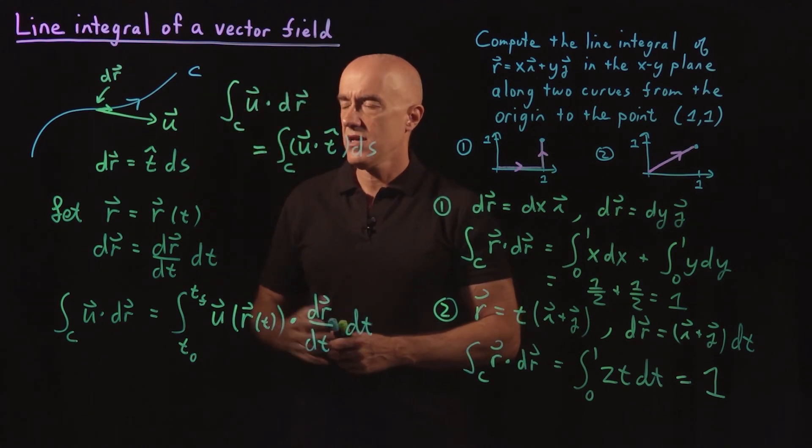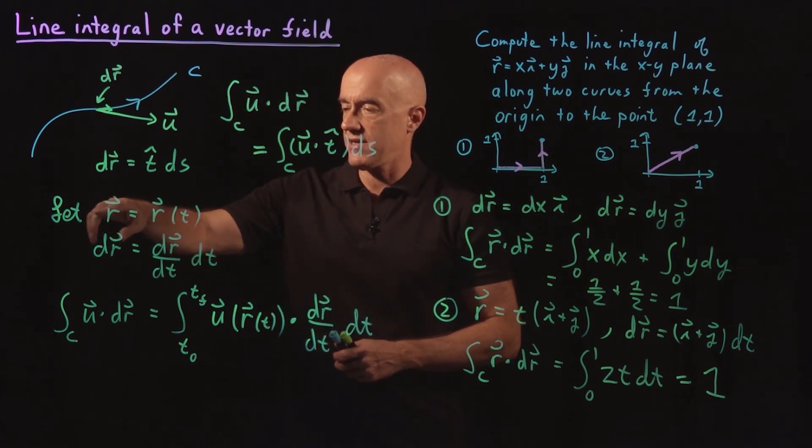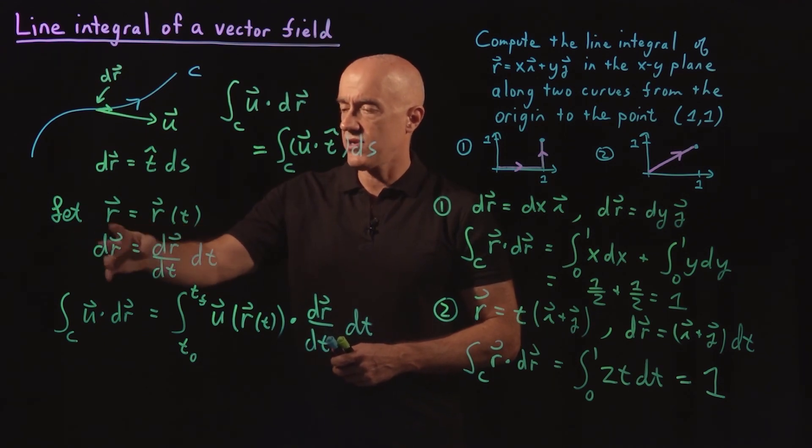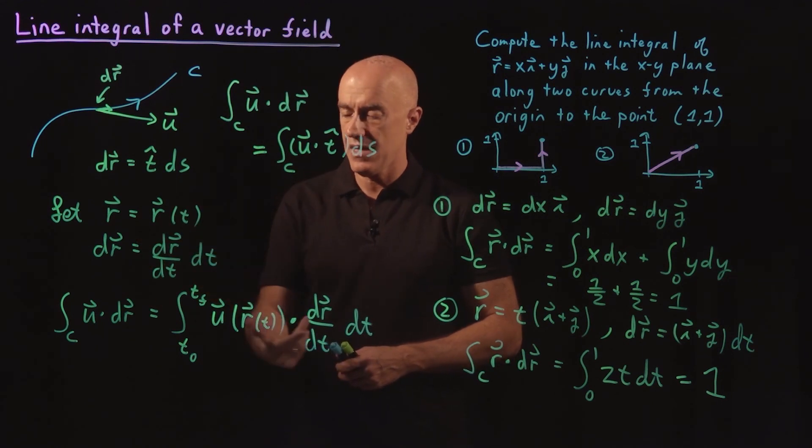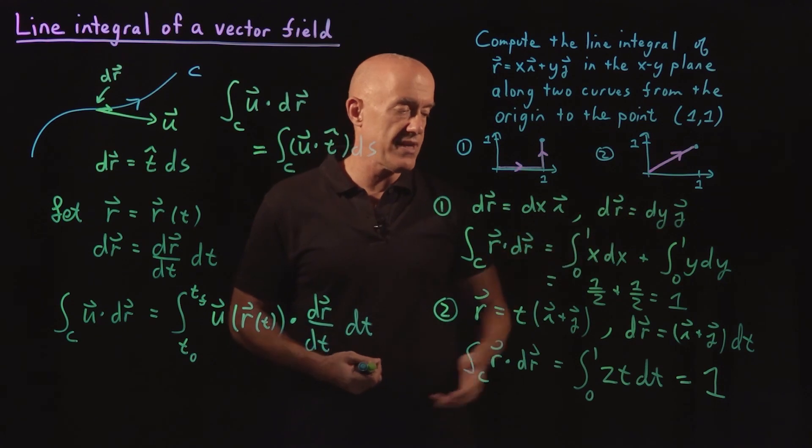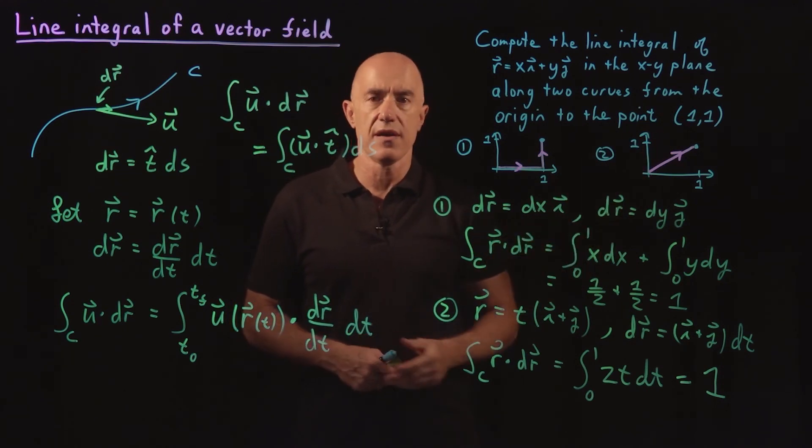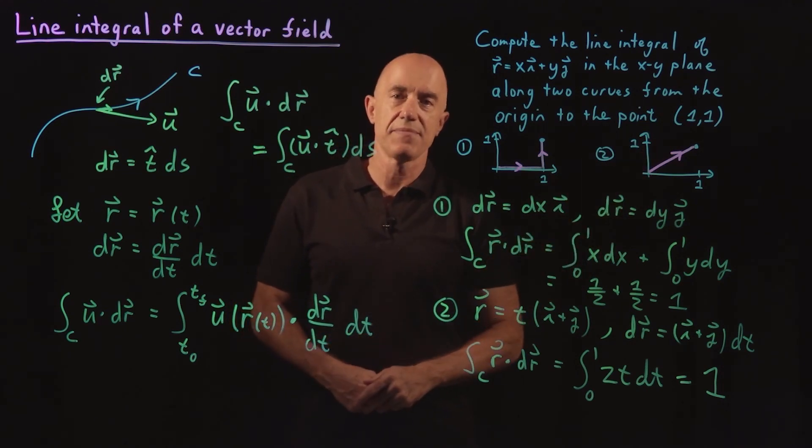To actually do this integral, we usually parametrize R, and then we write DR vector as dR/dt vector times dt, and then do this dot product. Here I give you what are essentially two very simple examples.